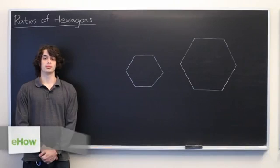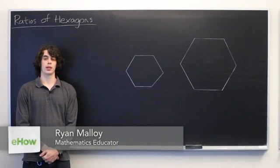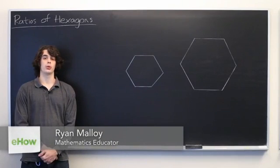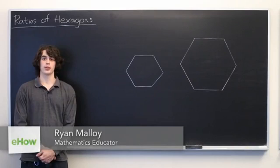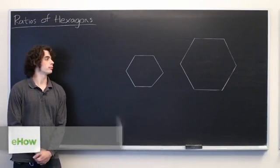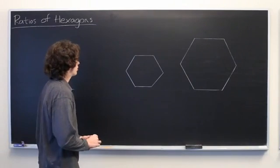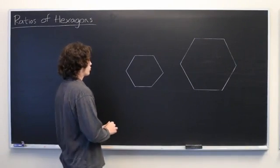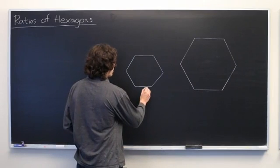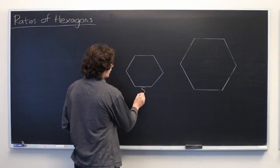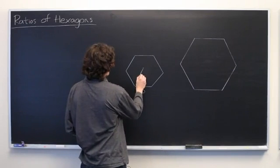Hi there. My name is Ryan Malloy. In this video we are going to discuss ratios of hexagons. Here we have two hexagons. We'll take the smaller of the two and say that it has side lengths S and area A.